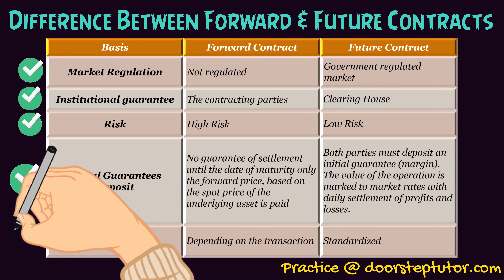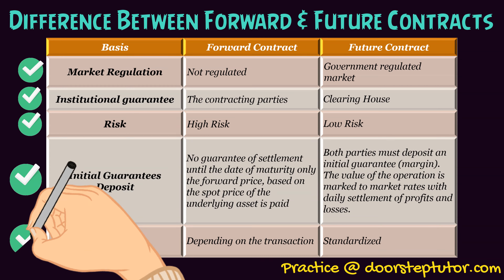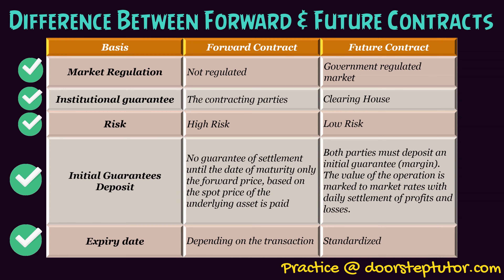The last difference is expiry date: in forward contracts the expiry date depends upon the transaction, whereas in futures contracts the expiry date is standardized.